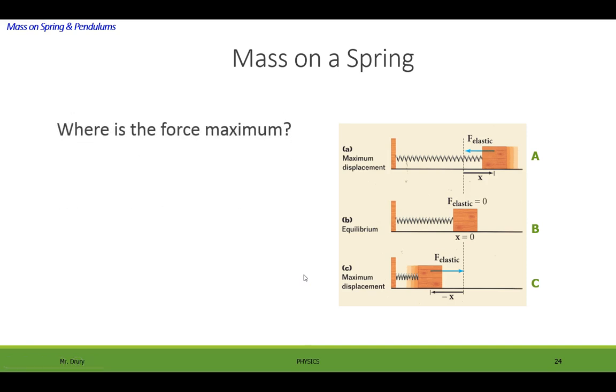First thing is, where's the force maximum? Well, where the displacement is maximum. Why is that? Well, we know that force is equal to kx or Hooke's law. I left out the negative sign because we're only really worried about the magnitude. Okay, so that occurs at both A and C, where the displacement is maximum, either positive or negative.